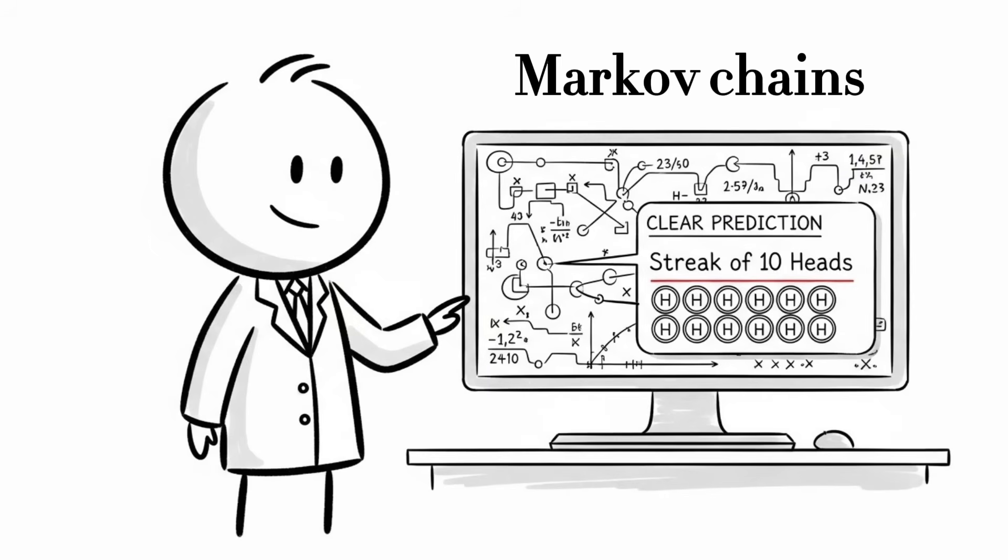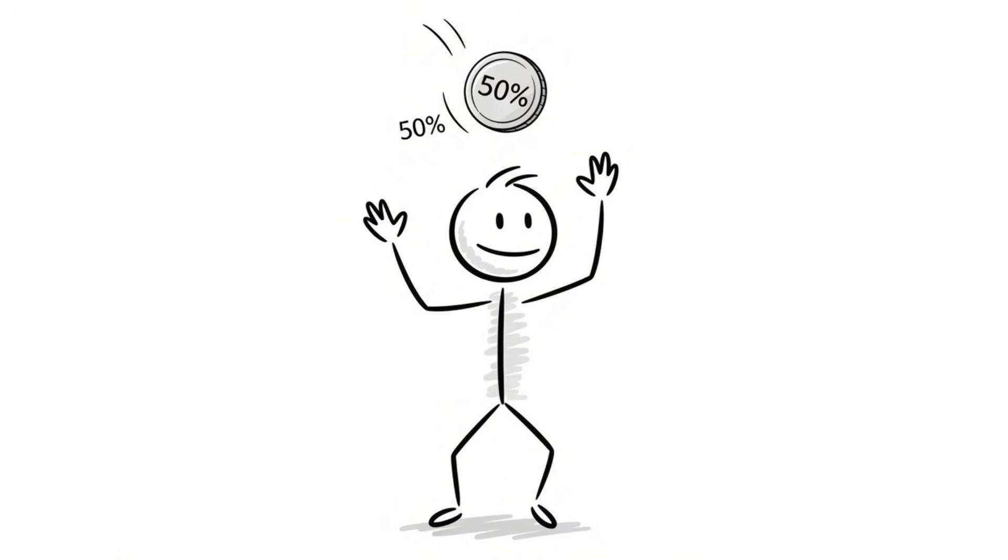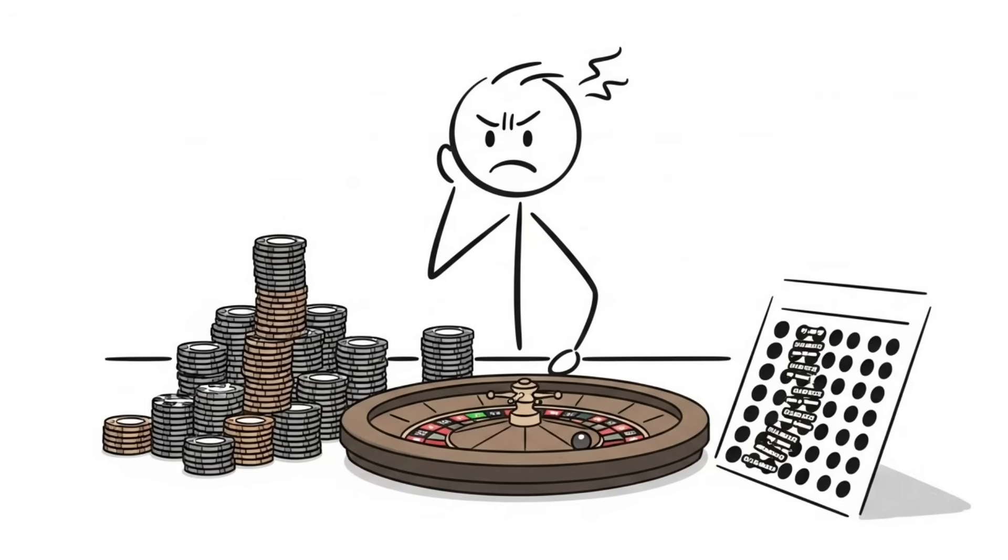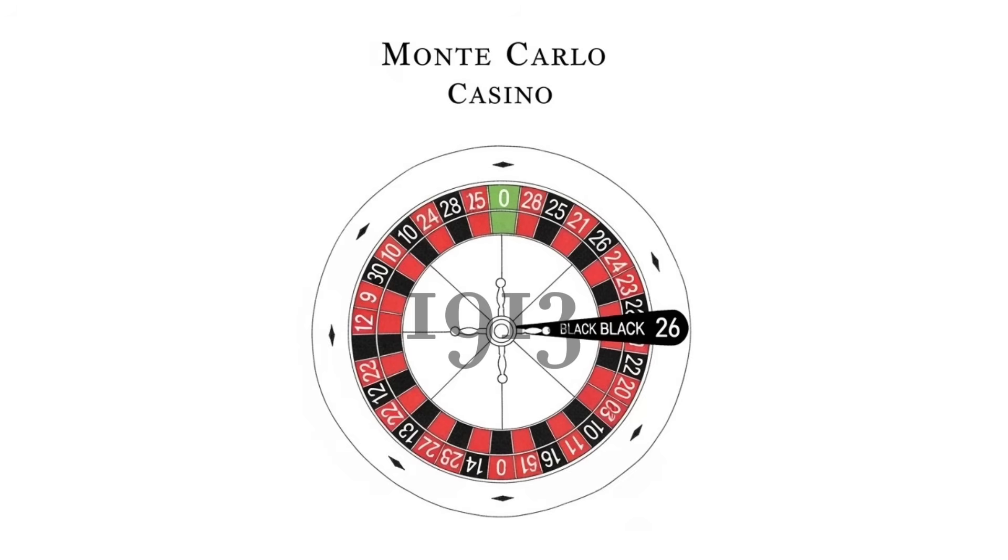Calculating using the mathematical system called Markov chains, the longest expected streak in 1,000 flips is around 10. Each and every single flip has 50-50 odds regardless of what came before. And over enough trials, unlikely sequences become normal. This is why people lose fortunes at roulette, convinced red is due after a streak of blacks.